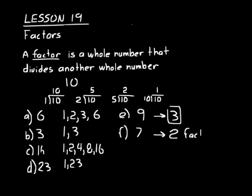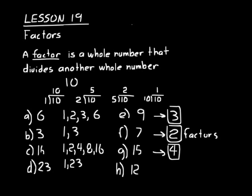For 15: 1 times 15 gives 2, and 5 times 3 gives 2 more — so 4 factors total. For 12: 1 times 12, 2 times 6, and 3 times 4 — that gives us 6 factors altogether: 1, 2, 3, 4, 6, and 12.